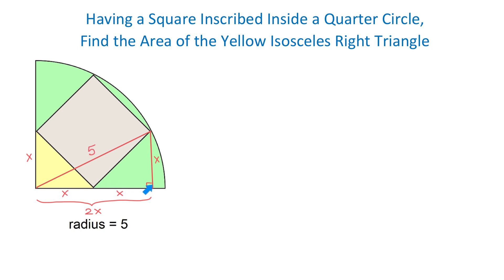If in this triangle we apply the Pythagorean theorem, then we can write that x² + (2x)² = 5². Now let's solve this equation for x.